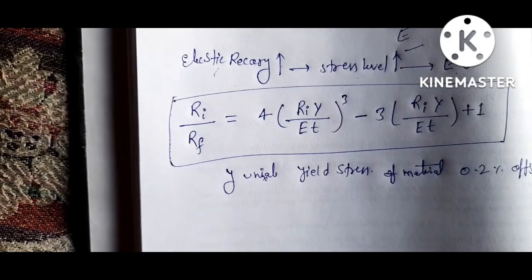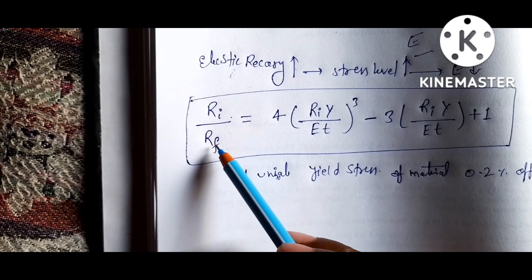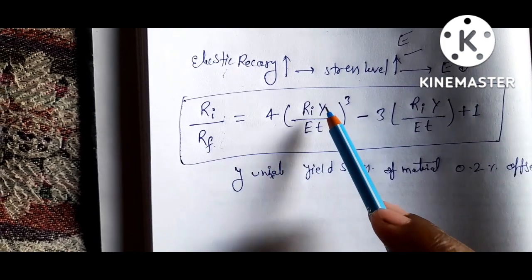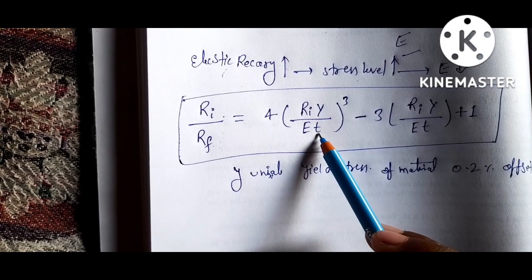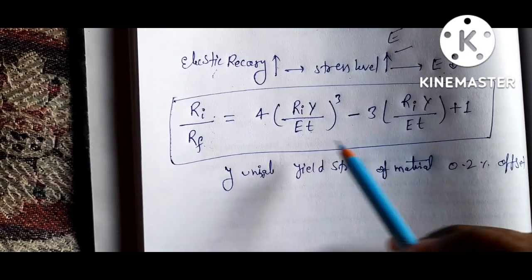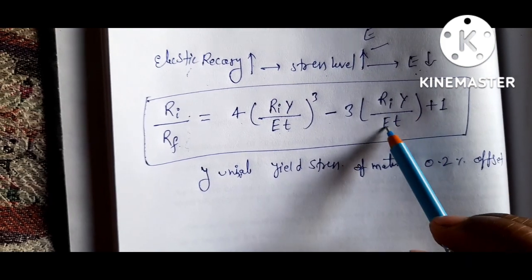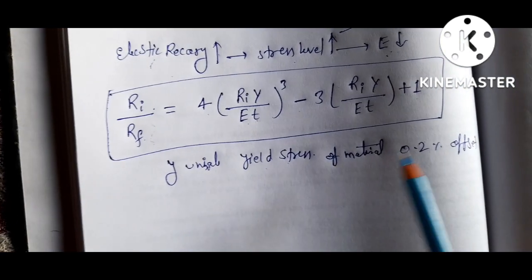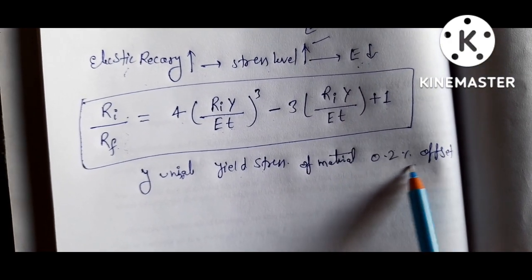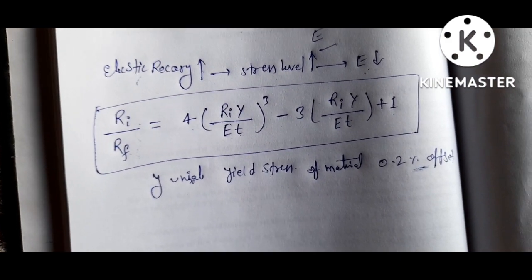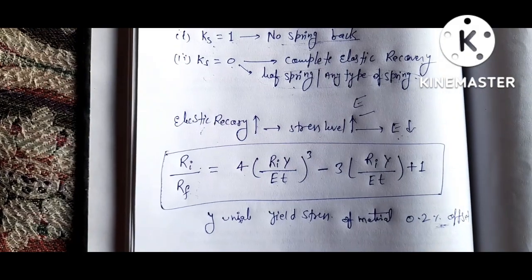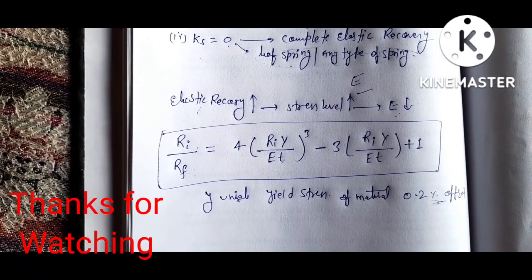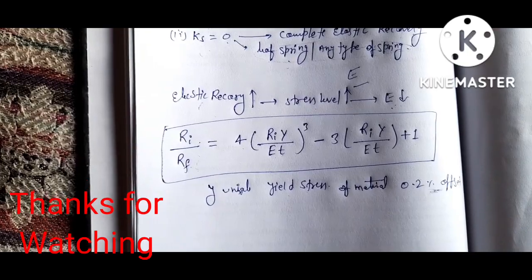The formula for spring back is: ri/rf = 4(ri × Y / E × t)³ − 3(ri × Y / E × t) + 1, where Y equals the uniaxial yield stress of the material and 0.2 percent offset is taken for yield stress. In the next video we will estimate spring back by solving equations based on this spring back formula.